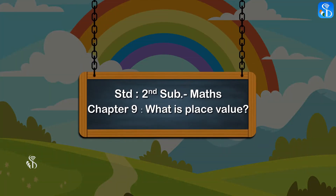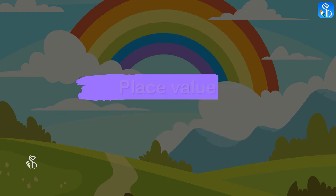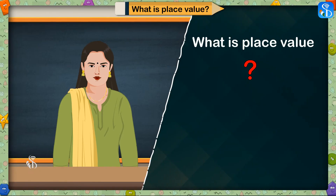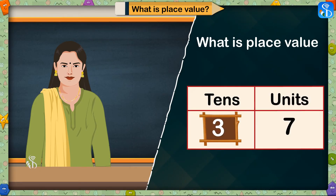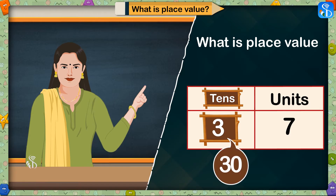Standard 2 Subject Maths, Chapter 9: What is place value? The place value of a digit in a given number is decided by its place in the number. That place determines the place value of a digit.